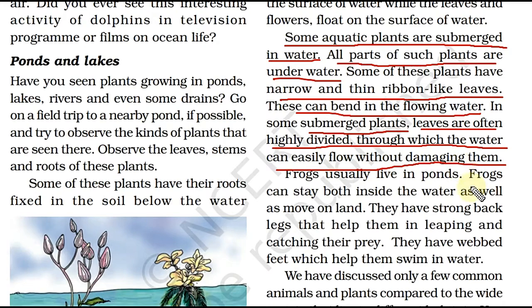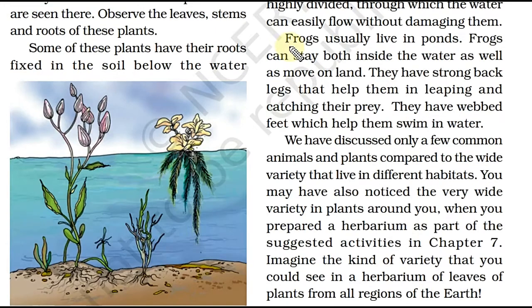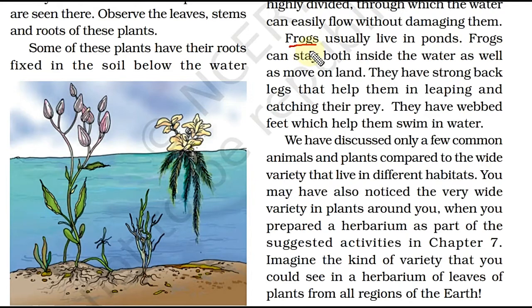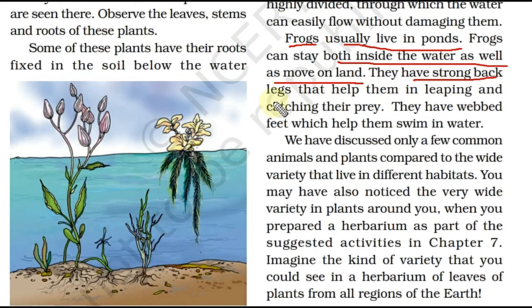Now let's talk about the frog. Frogs usually live in ponds, but they can also stay on land. That is why we call the frog an amphibious animal. Frogs can stay both inside the water and move on land. They have strong back legs that help them in leaping and catching their prey.